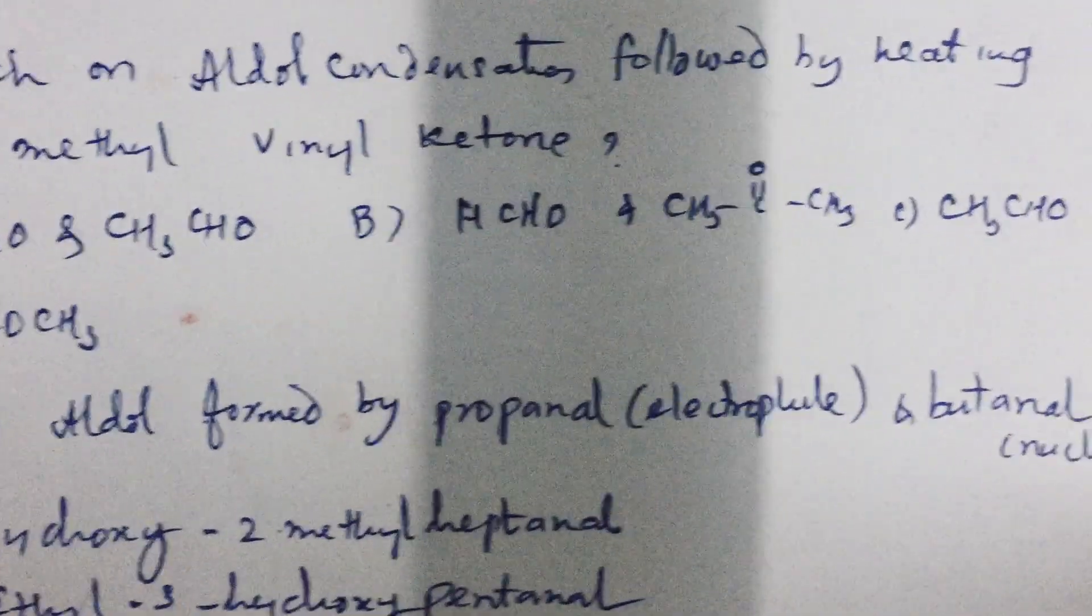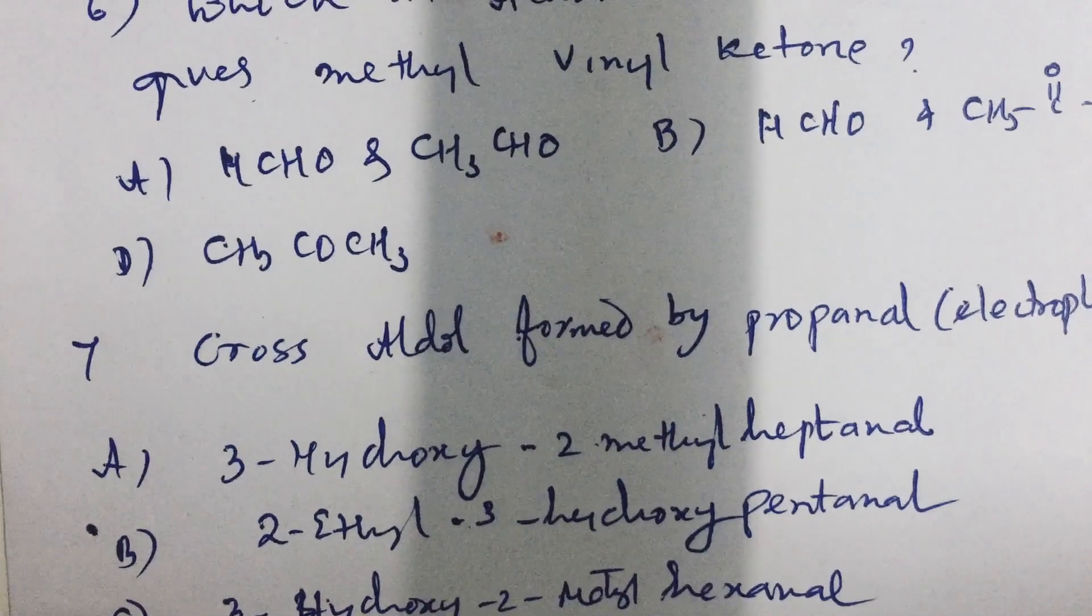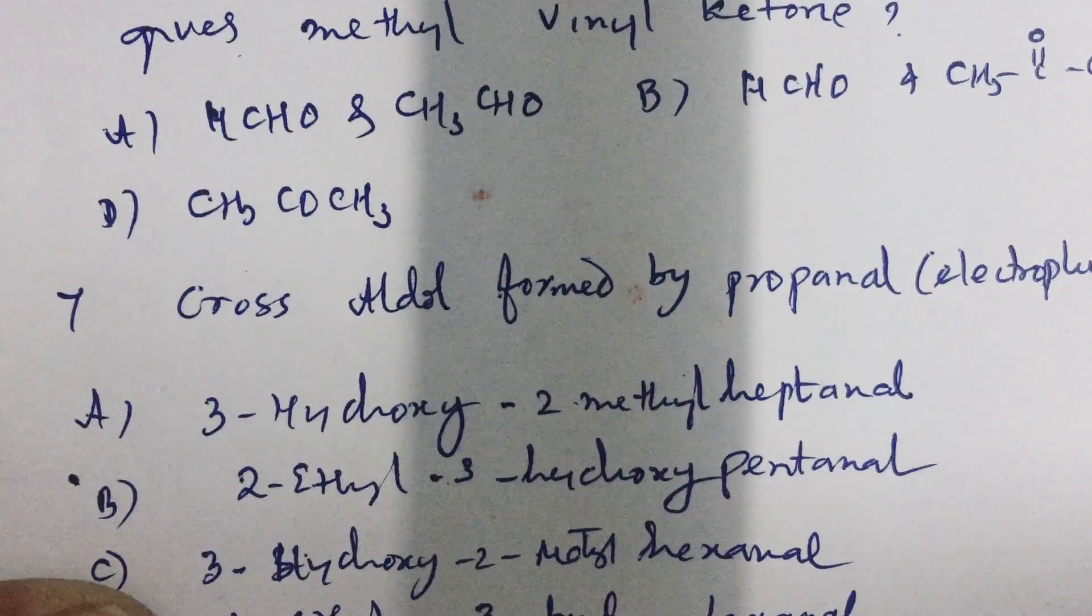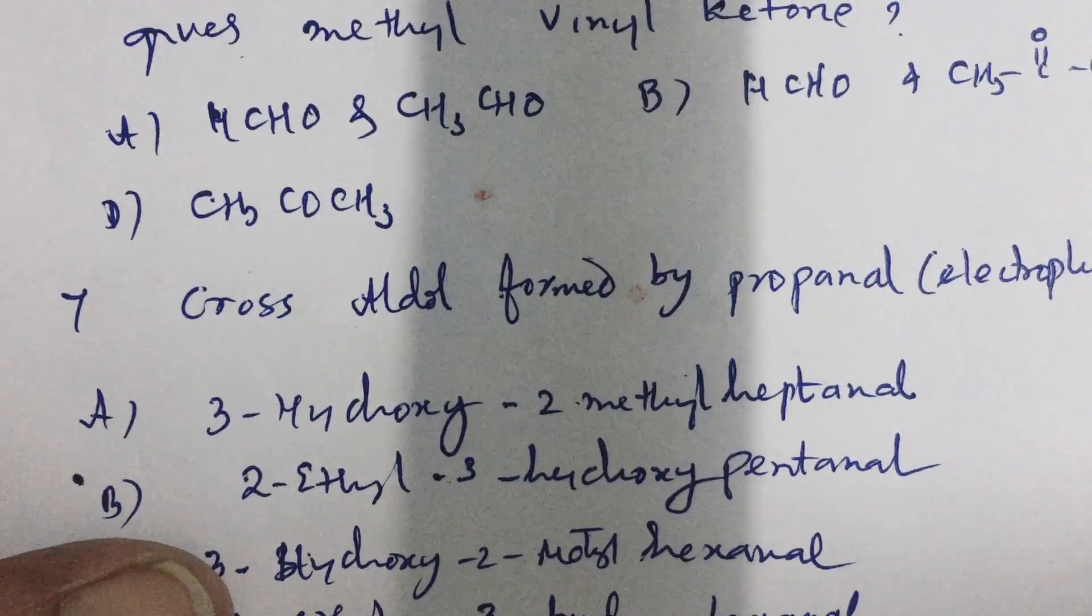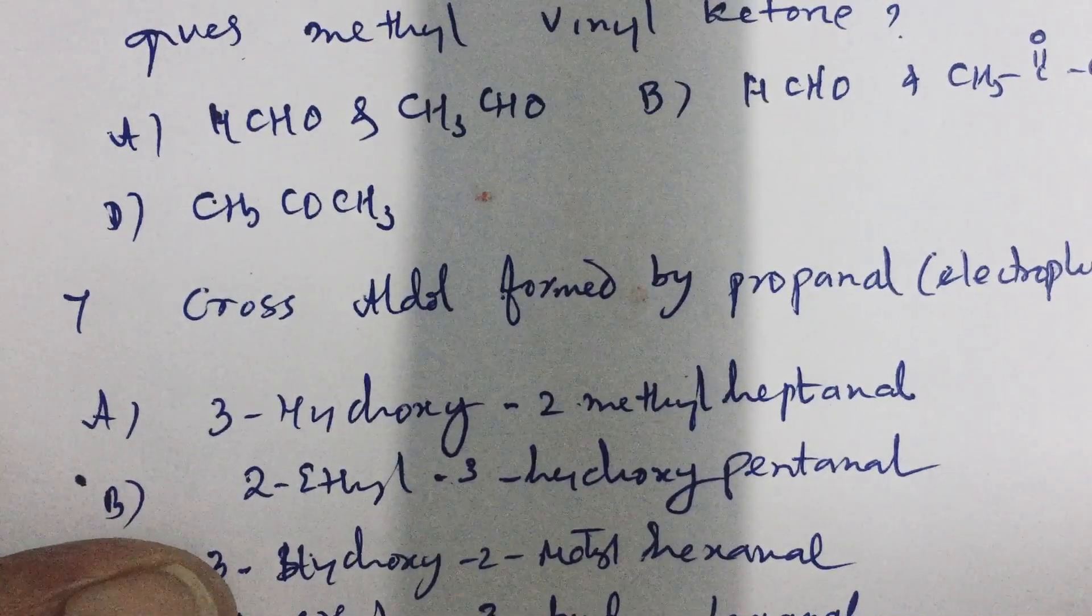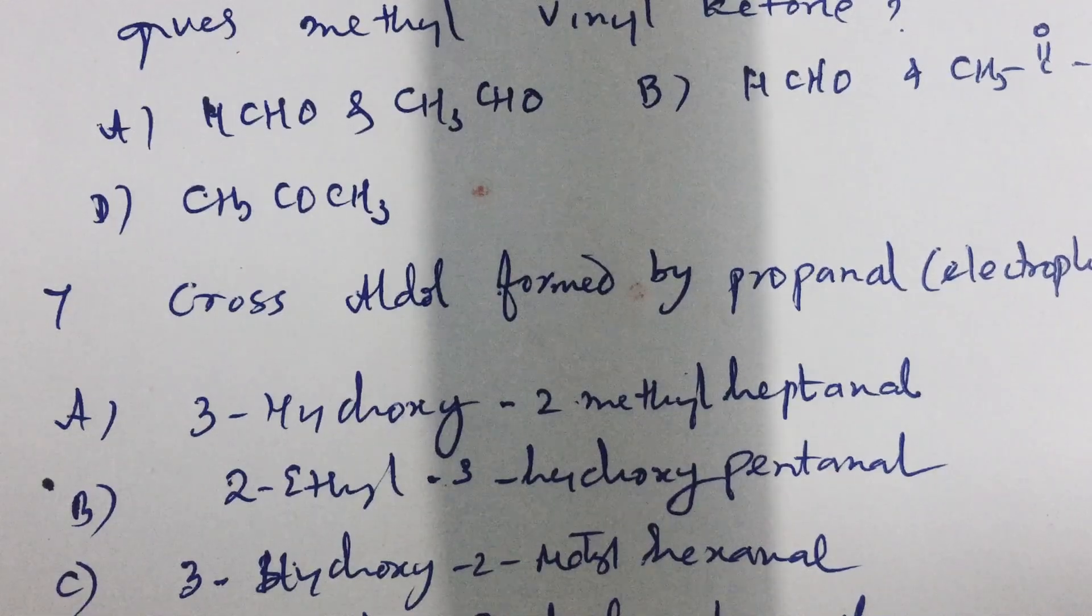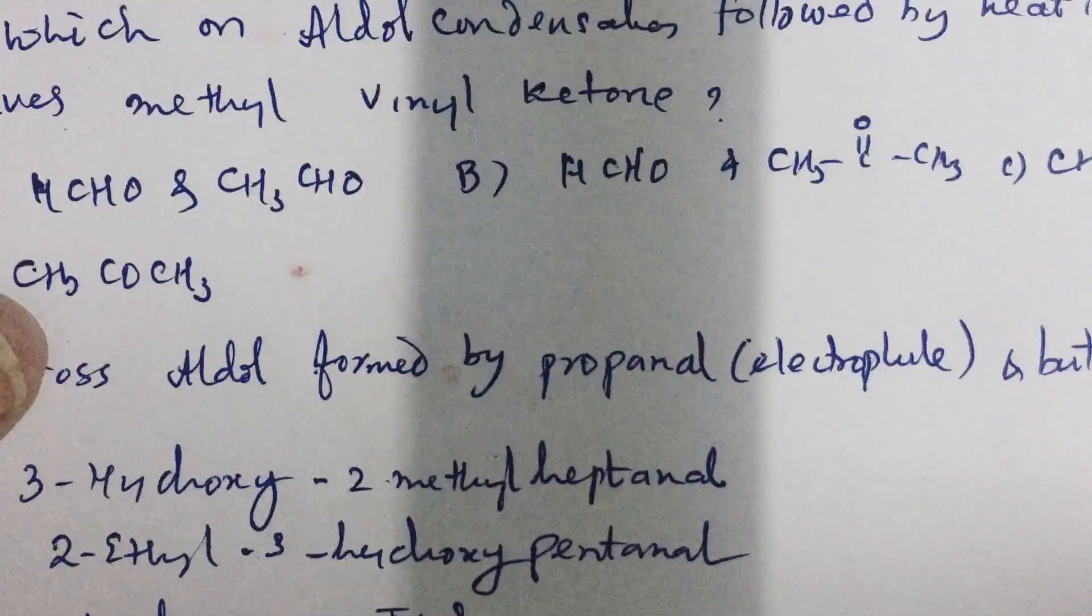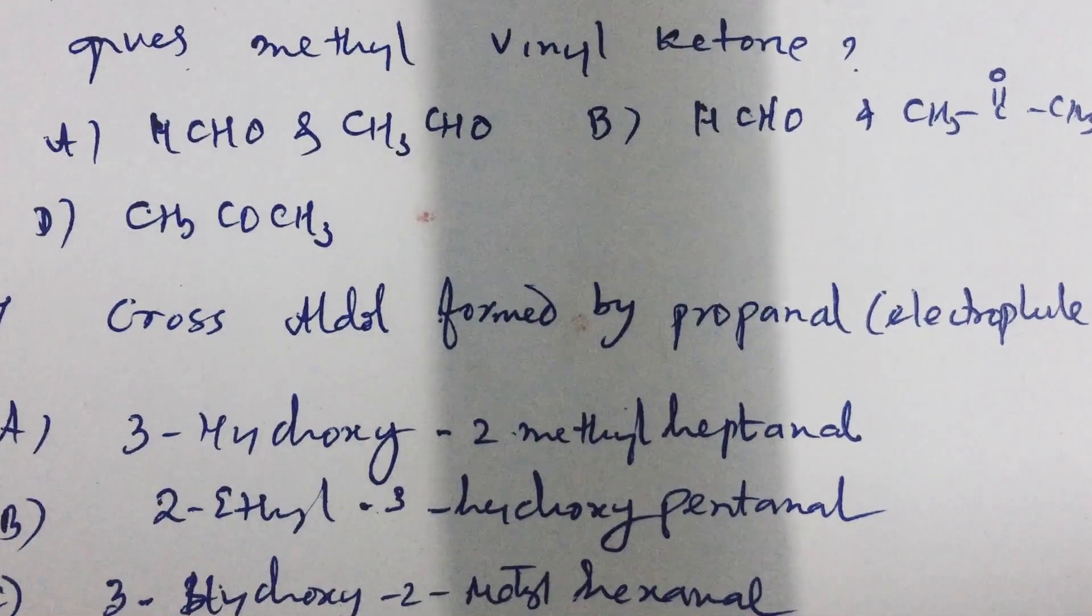Cross aldol formed by propanal, which is an electrophile, and butanal, which is a nucleophile. Why? Must be. Try to work out this question. Cross aldol formed by these two. If you carefully work out, you will arrive at the answer 3-hydroxy-2-methylhexanal. Try to work it out yourself. 2-ethyl-3-hydroxy-pentanal. That is the answer. One quick way to arrive at this answer is, you see the total number of carbons, propanal, butanal, total 3 plus 4, 7. You can work out the number of carbons and quickly arrive at the answer.